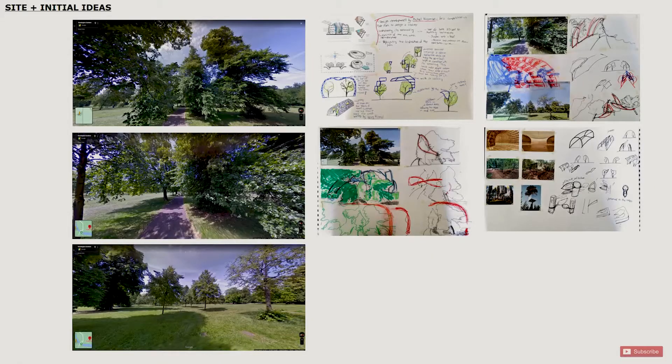Site and initial ideas. Here we started with the bigger picture — a bigger location — my one being Hyde Park, and then narrowing it down to the specific site where the design would be placed. These are my three potential sites. I tried to trace over them and play around with form, exploring how my ideas could look. At this stage I was still unsure about what I wanted to do.